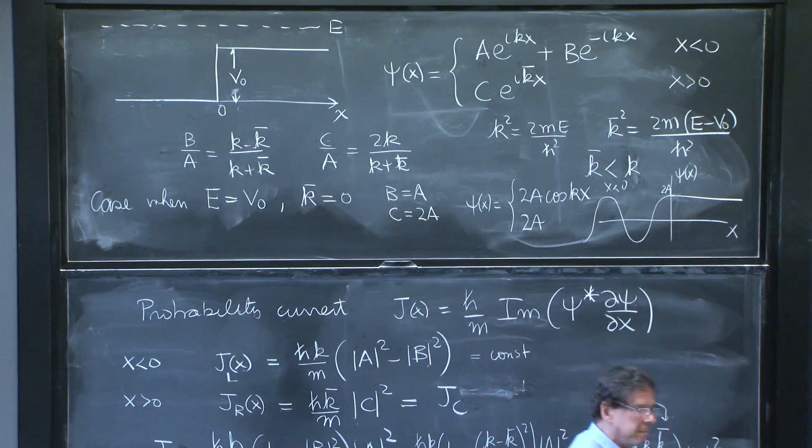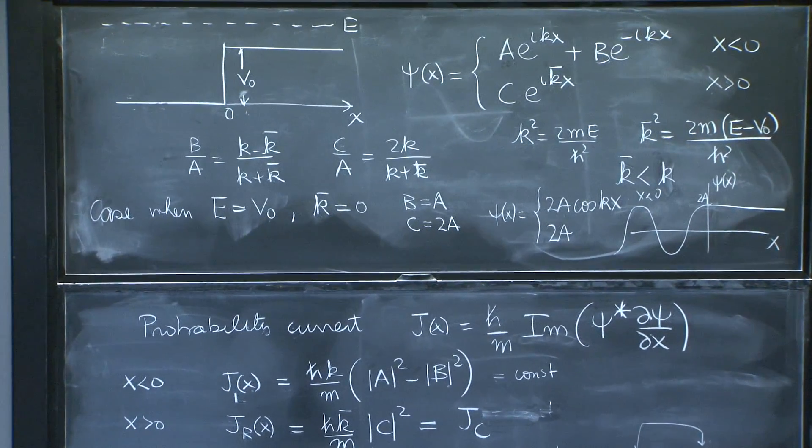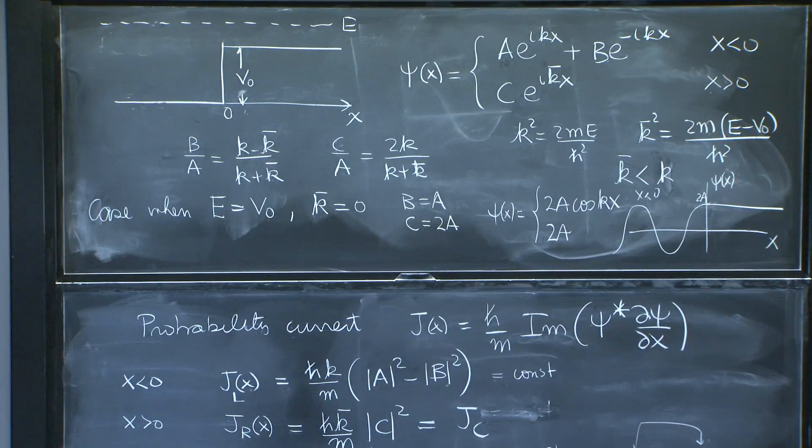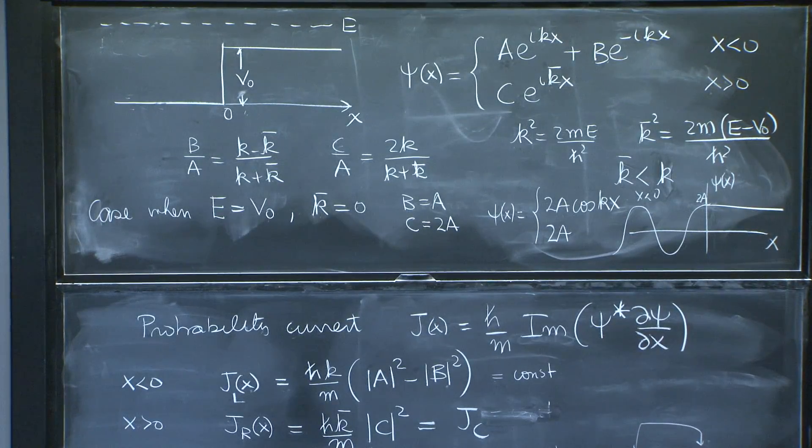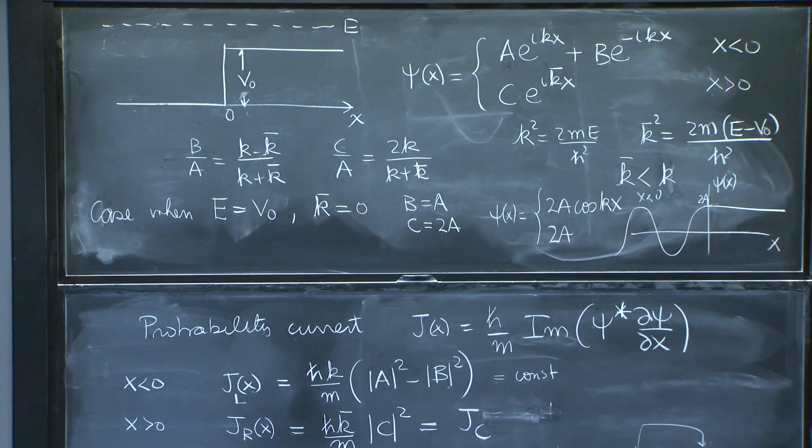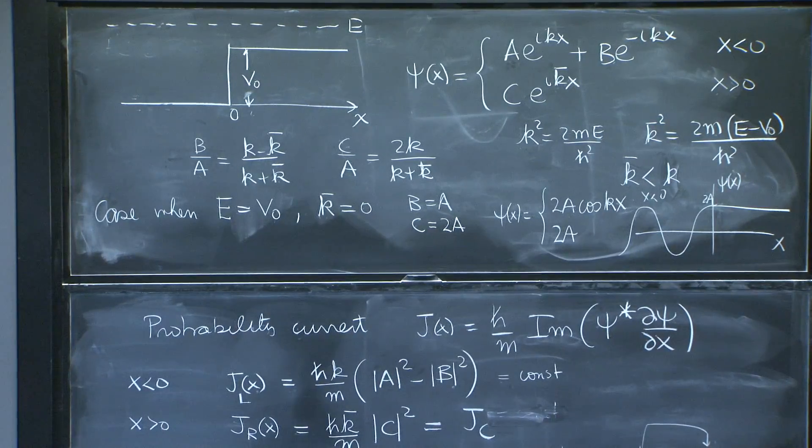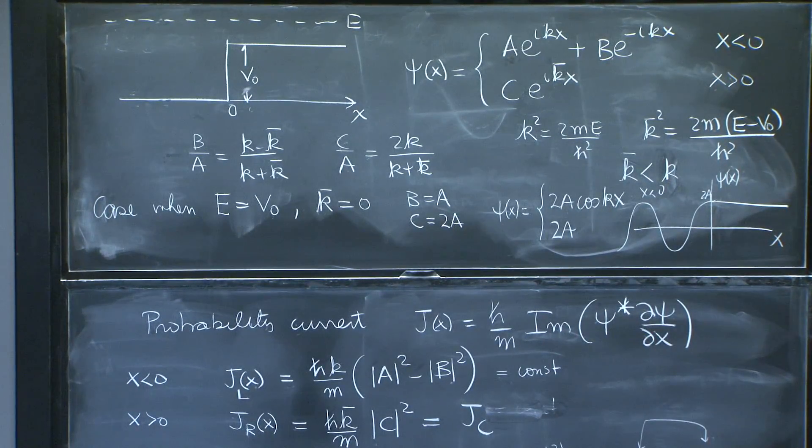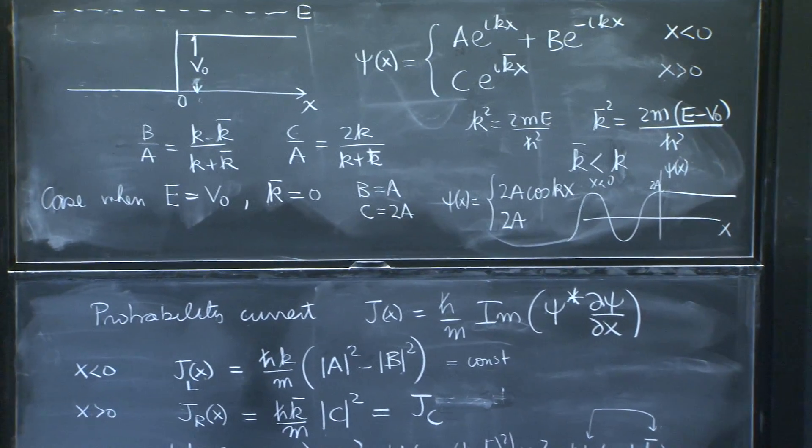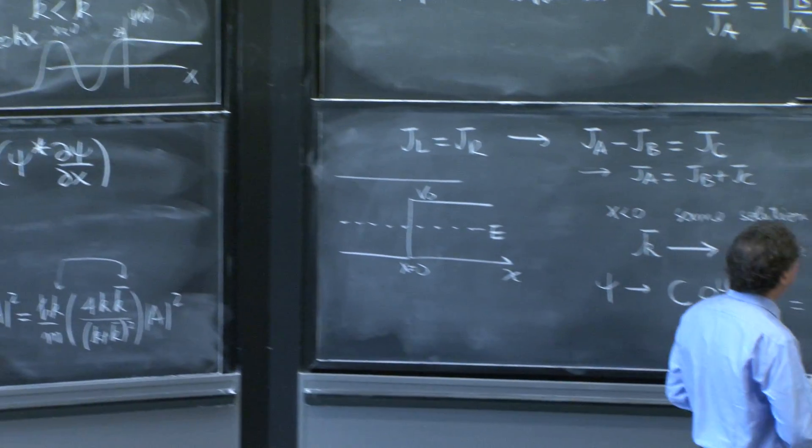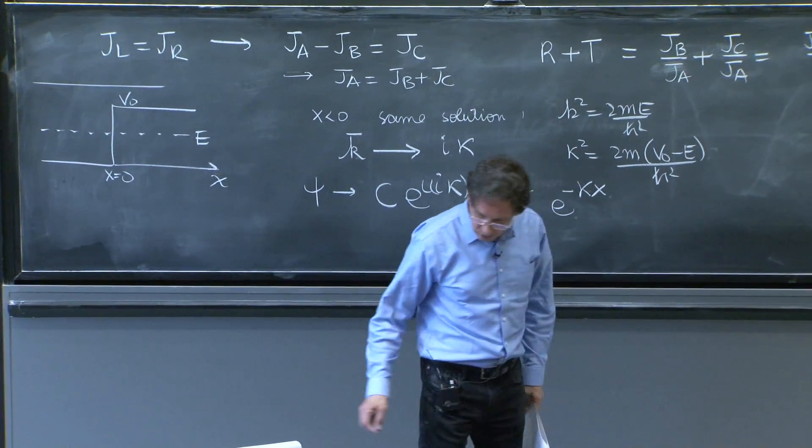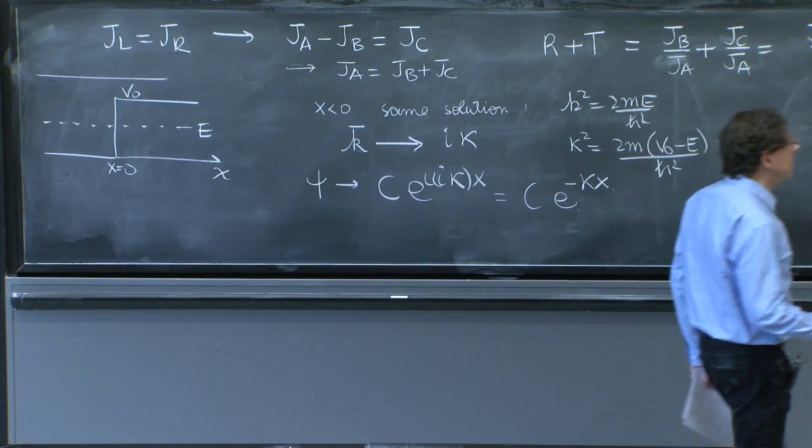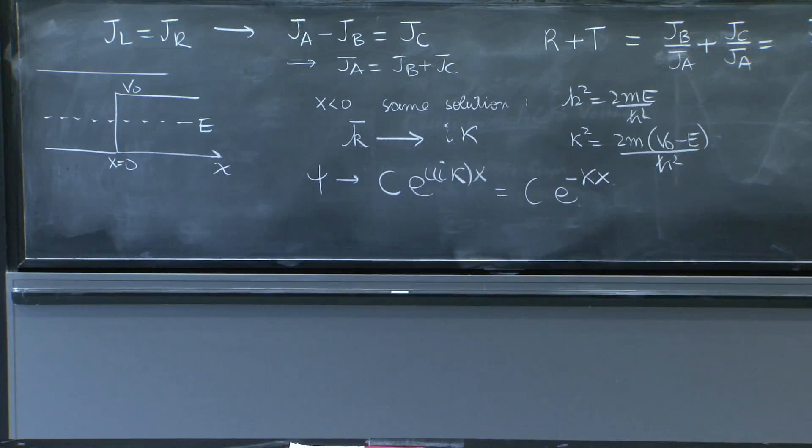And I don't have to write the continuity equations again, nor solve them. I can take the solutions and let everywhere that was a k-bar replaced by iκ-bar. So what do we get? We should go here and delete those circuits.